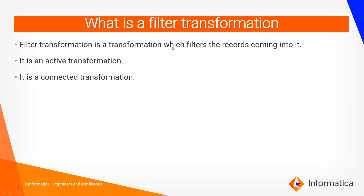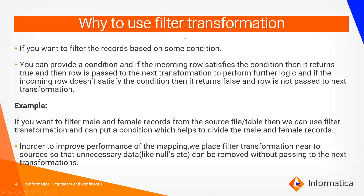Why use a filter transformation? If you want to filter records based on some condition, you provide a condition in the filter transformation. If the incoming record satisfies that condition, it returns true and the row is passed to the next transformation for further logic. If the incoming row doesn't satisfy the condition, it returns false and the row is skipped. For example, to filter male and female records from a source file or table, you can put a condition where gender equals male or gender equals female, which helps divide the male and female records.